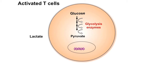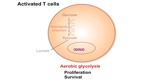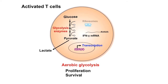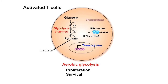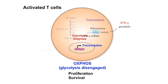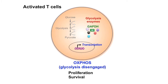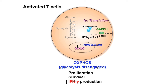Activated T-cells engage aerobic glycolysis, where glucose is metabolized by a series of glycolysis enzymes to pyruvate in the cytoplasm of the cell. Aerobic glycolysis can support both the proliferation and survival of activated T-cells. Activated T-cells will also gain effector functions — in particular, they'll transcribe and translate interferon gamma messenger RNA, resulting in the production of interferon gamma protein. When T-cells are unable to engage glycolysis and are forced to engage oxidative phosphorylation, glycolysis enzymes are no longer engaged in the glycolysis pathway. One of these enzymes, GAPDH, has been shown to act as an RNA binding protein, where it can bind to the 3' UTR of interferon gamma messenger RNA, and this binding will prevent the translation of this cytokine — leading to decreased interferon gamma production from activated T-cells engaging oxidative phosphorylation.